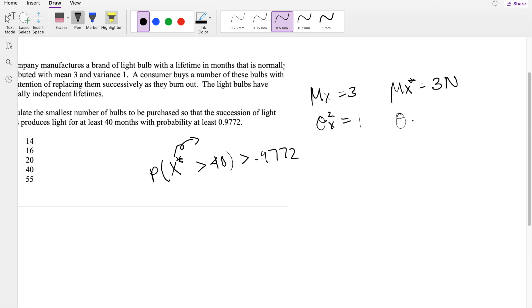Likewise, the standard deviation of x star is going to be equal to the square root of the variance times n. So this is equal to square root of n.